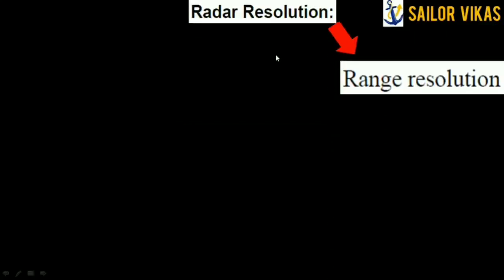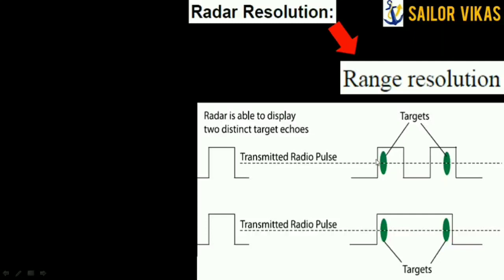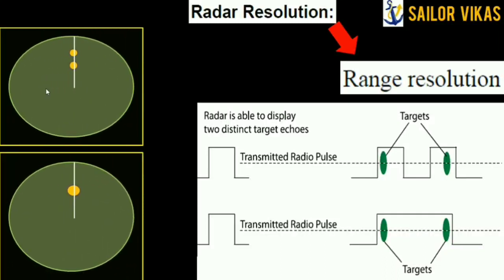The second type is range resolution, where two targets are on the same bearing. When a short pulse is transmitted, both nearby targets are identified individually. When a long pulse is used, both targets fall within one pulse and are detected as only one target on the radar screen. For a short pulse they appear as two distinct targets; for a long pulse, the flattening and brightening effect merges them into one paint.